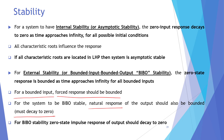For simplicity, for BIBO stability, the zero state impulse response of the output should decay to zero. We are now talking about the zero state response with impulse input. The impulse input is the simplest input, and if the system's zero state impulse response decays to zero or is bounded, we can say the system is BIBO stable.